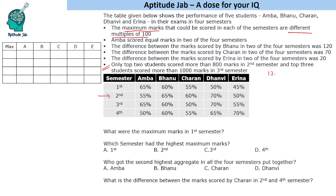Let us see what happens if the maximum marks are 1200. The top 2 students would have 780 and 840. So if we say 1200, only one student scores more than 800 marks. If we take 1300, 65% of 1300 is 845 and 70% is 910, while 60% would be 780. This satisfies the condition.